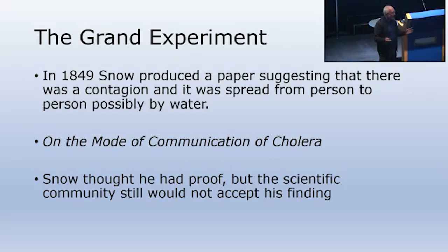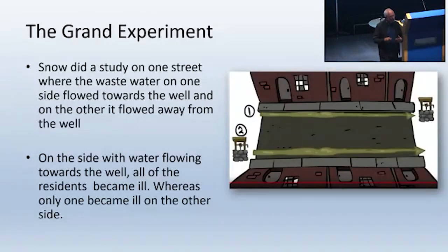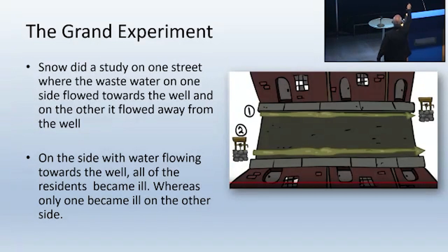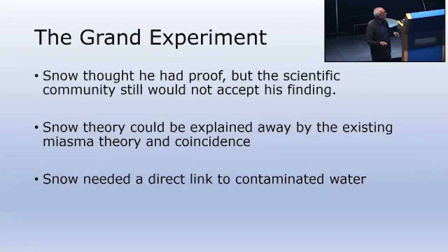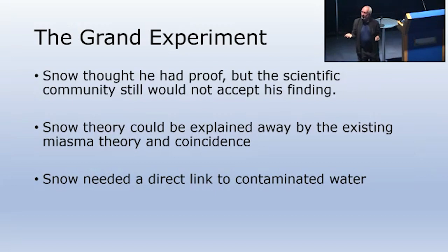The scientific community was still quite reluctant regardless of how Snow presented his evidence. He needed his grand experiment. He noticed a particular street in London where there'd been an epidemic, and what he observed was that where the water flowed down the street toward the well, on that side of the street everybody was becoming ill. The side where water flowed away from the well — people were not getting sick. So the residents on one side were probably picking up water contaminated by sewage flowing down the street, though the scientific community still explained it away as coincidence with miasma.